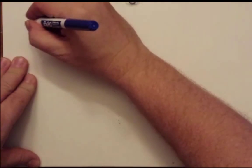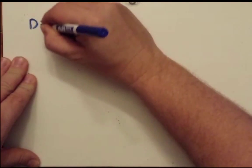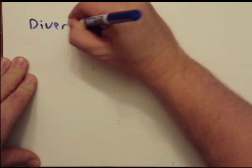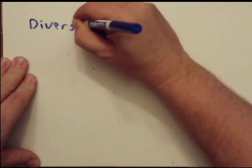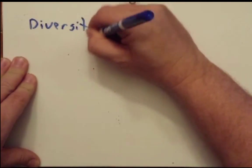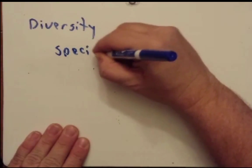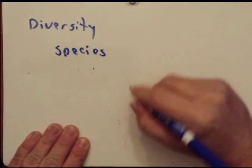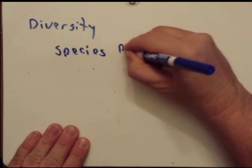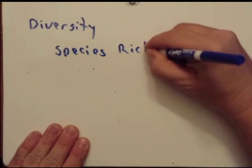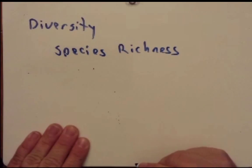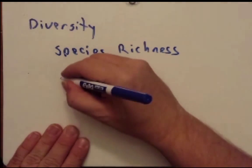Let's begin this podcast with talking about diversity, at least diversity as we think of it in ecology terms. We can quantify diversity using these two terms: species richness and relative abundance.